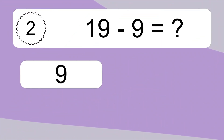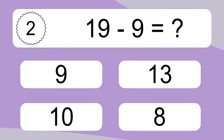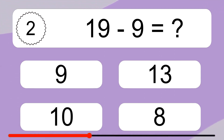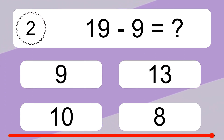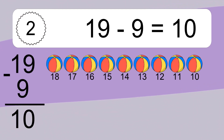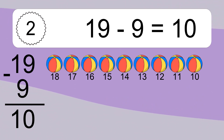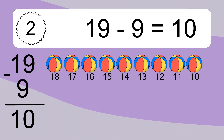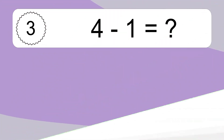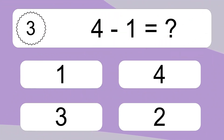19 minus 9 equals what? 19 minus 9 equals 10. Let's count it: 18, 17, 16, 15, 14, 13, 12, 11, 10.